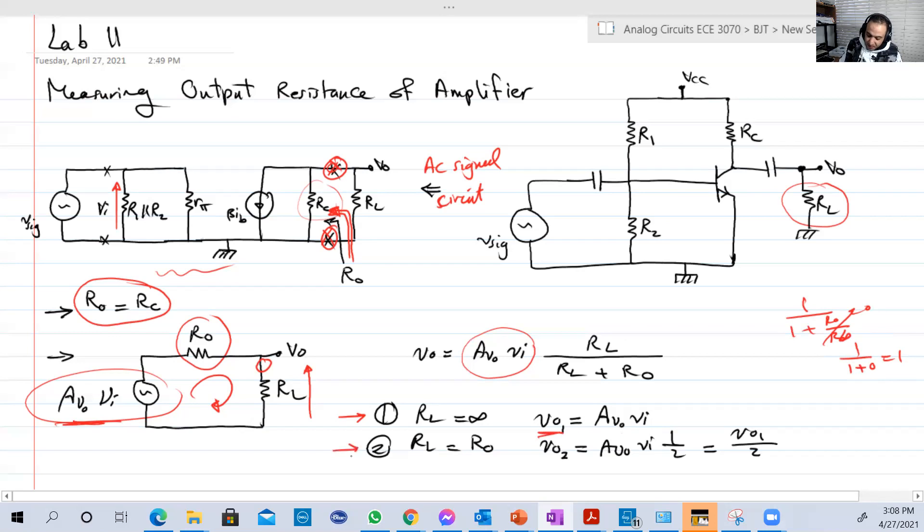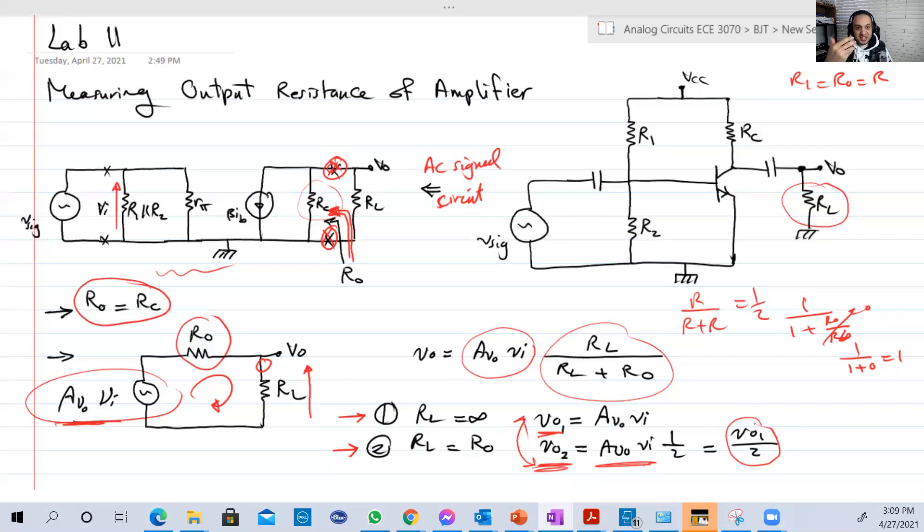Good. Now the second case. If we know RO somehow, and we set our load to be equal to RO, okay? So now our RL and RO are equal. So just to call them R. So our load equal to RO equal to R. So that ratio will be R over R plus R. It's basically half, right? So VO2, I'm going to name the output in that case, when our load is equal to RO, equal to VO2. So VO2 is basically AV_no-load times VI over 2. Just to compare VO2 and VO1. What is that? That's basically VO1 over 2.